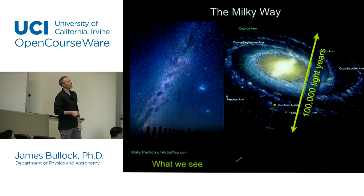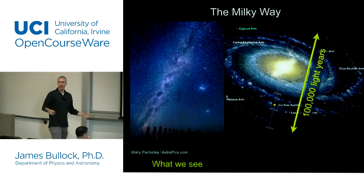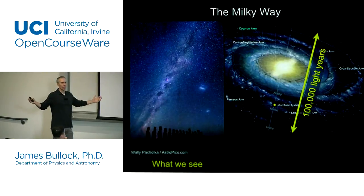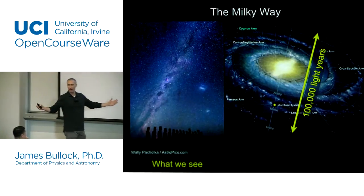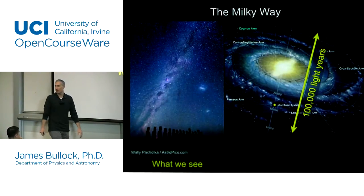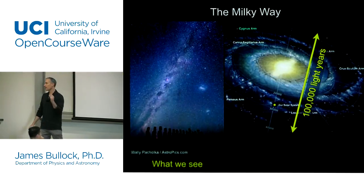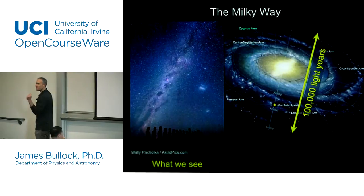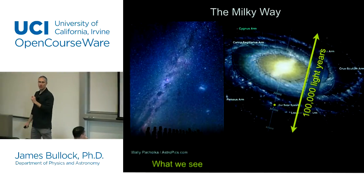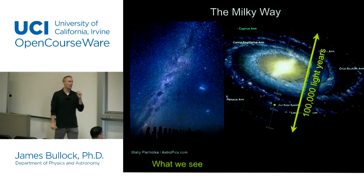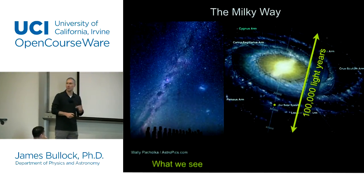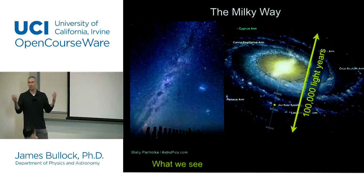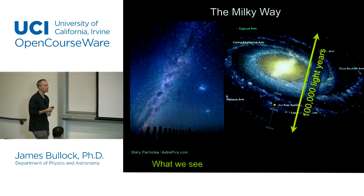Our Milky Way is about 100,000 light years across. This is very big. It takes light eight minutes to get to us from the sun. It would take light 100,000 years to cross the Milky Way. So it's a big, big thing.